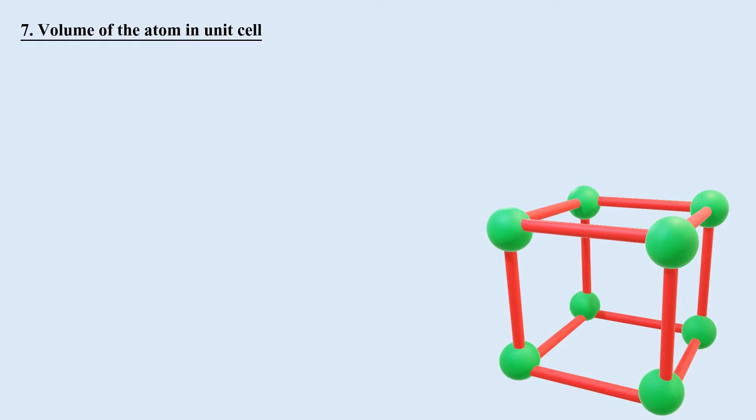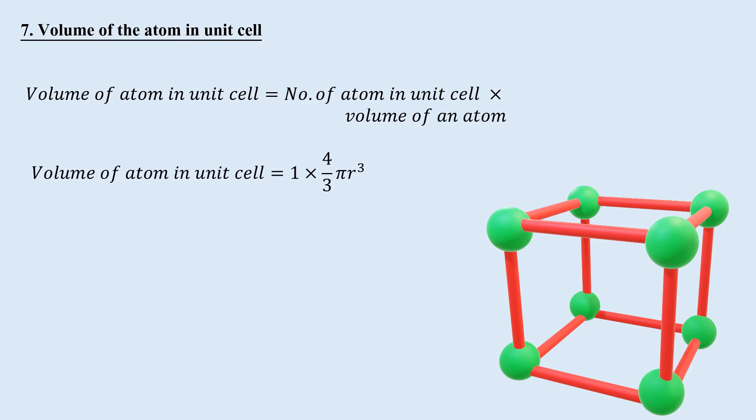Volume of atom in unit cell: The total volume of atom in unit cell is the multiple of the number of atoms in unit cell and the volume of atom. Since there is only one atom in a simple cubic unit cell, and an atom is spherical, therefore its volume will be 4 by 3 pi r cube. Hence, volume of the atom in simple cubic unit cell is 4 by 3 pi r cube.